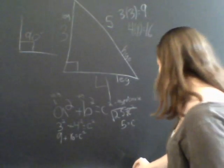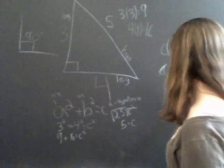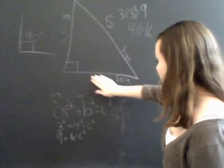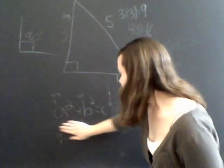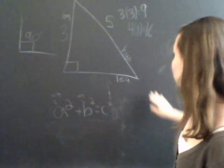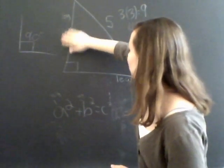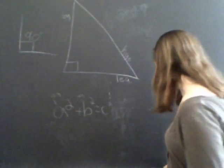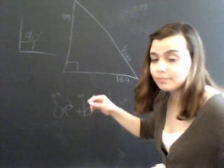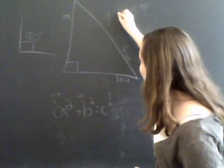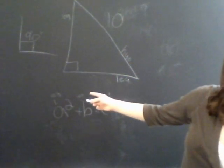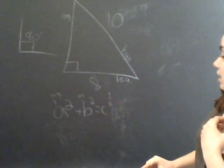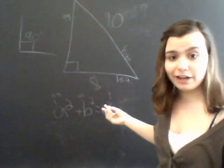Now, if you had the lengths of the hypotenuse and the leg, it would be the same equation. Okay? So what you would do is, let's get rid of these values. Let's say that the hypotenuse's length is 10. And this leg's length is 8.